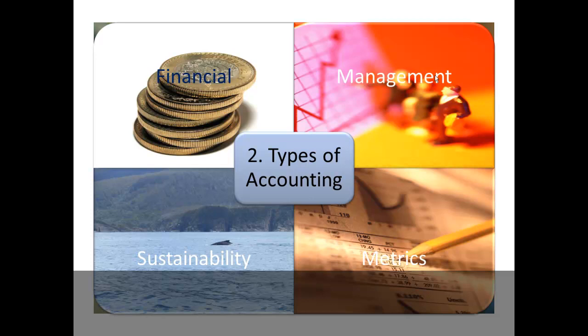Examples of sustainability accounting at the moment include the GRI — the Global Reporting Initiative — and the Greenhouse Gas Protocols. In Australia, the National Water Accounts is an example where there are now standards for water, very similar to financial accounting standards, but measuring things in litres rather than dollars. In summary, there are two types of accounting — financial and management — with increased importance of sustainability accounting and metrics over the coming decade. Our emphasis here is going to be on financial accounting.